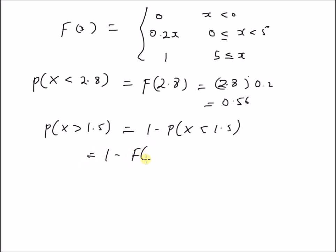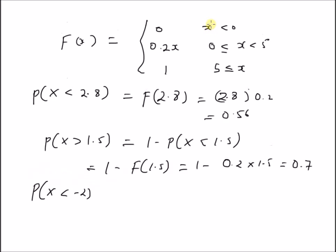So we have 1 − f(1.5). The value 1.5 lies in the second interval, so f(1.5) = 0.2 × 1.5 = 0.3, giving 1 − 0.3 = 0.7. For P(X < −2), since −2 lies in the first interval, the CDF equals 0, so the probability is 0.